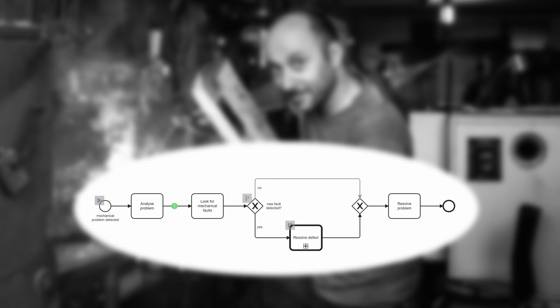An instance of the resolved effect task is initiated for each mechanical problem that is identified in the production plant. During the execution of the resolved effect task, if a mechanical fault is identified during investigations that is not related to the current effect, another instance of the resolved effect is started.